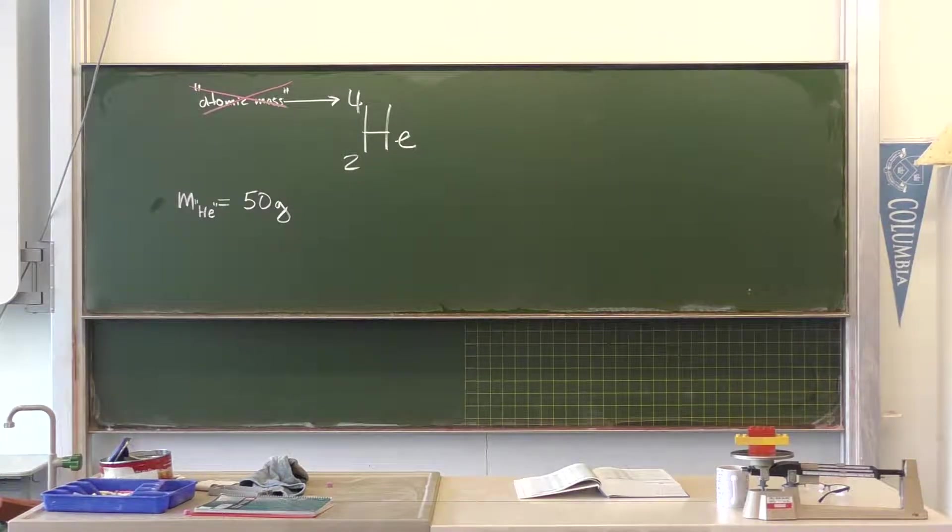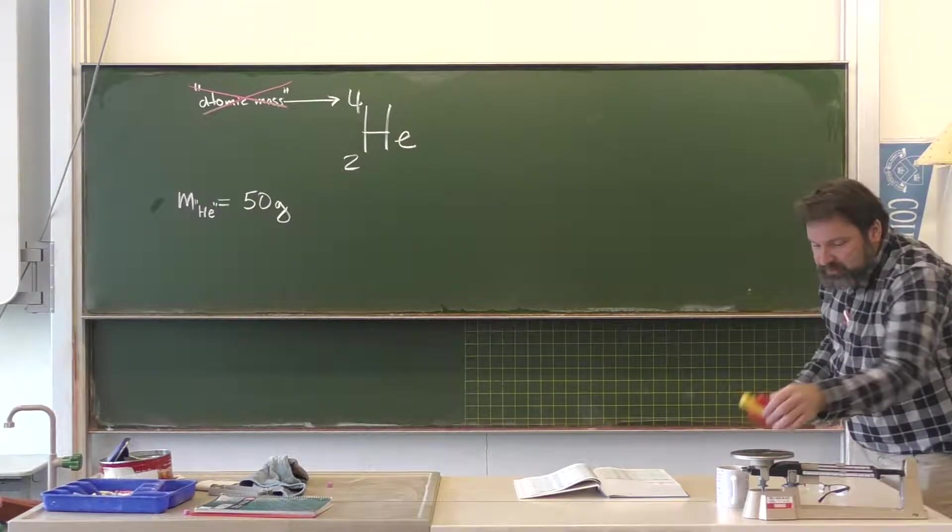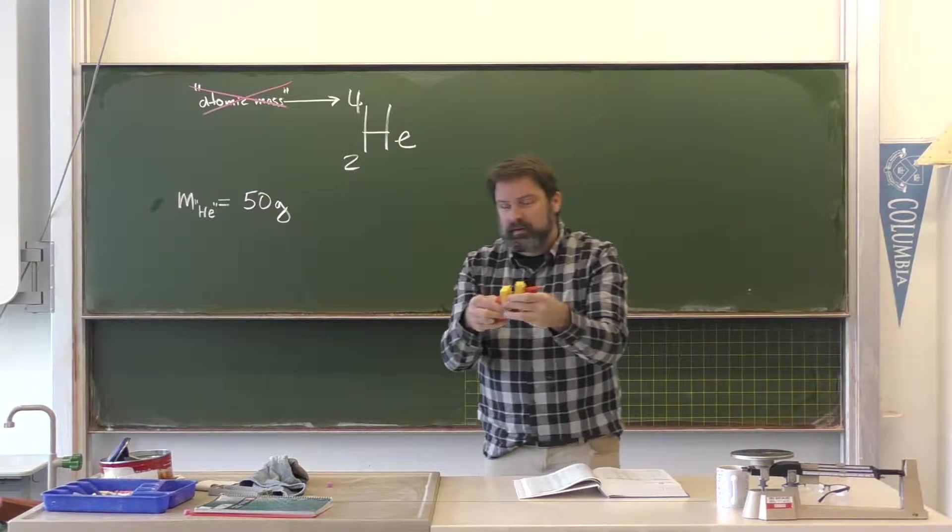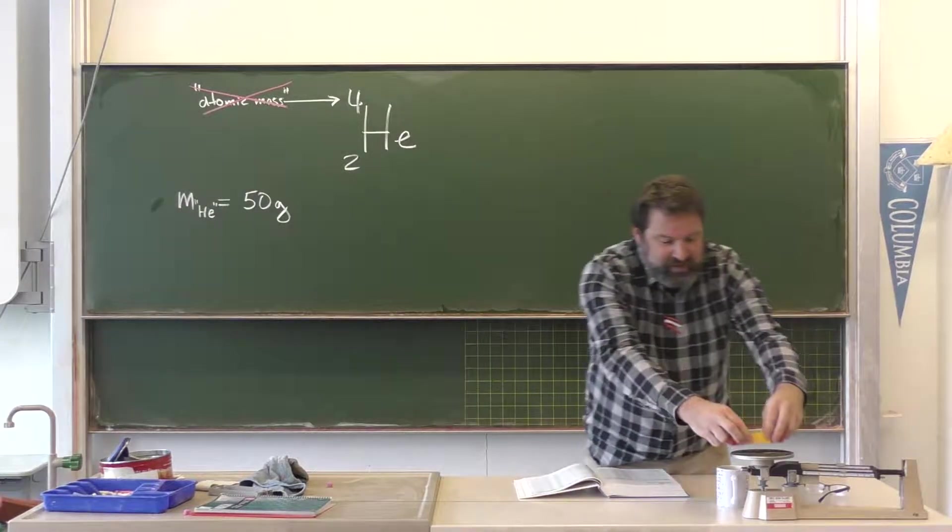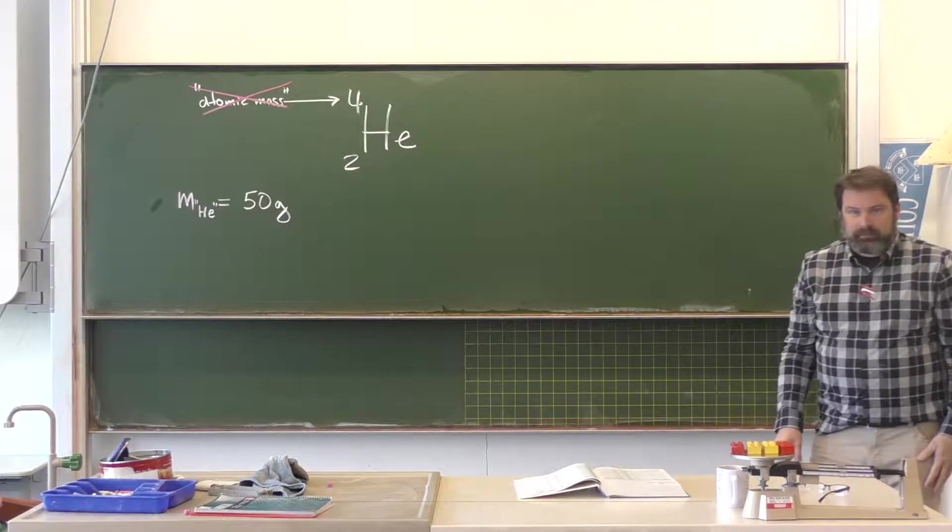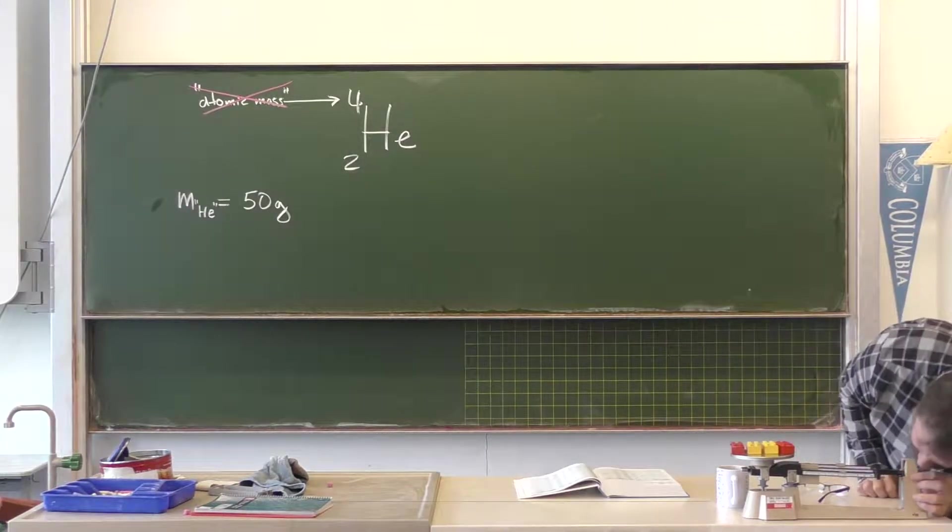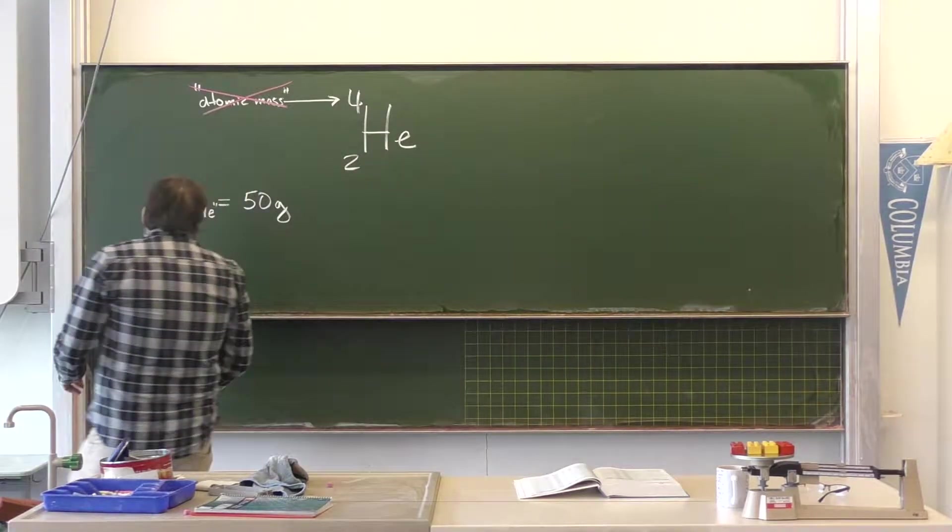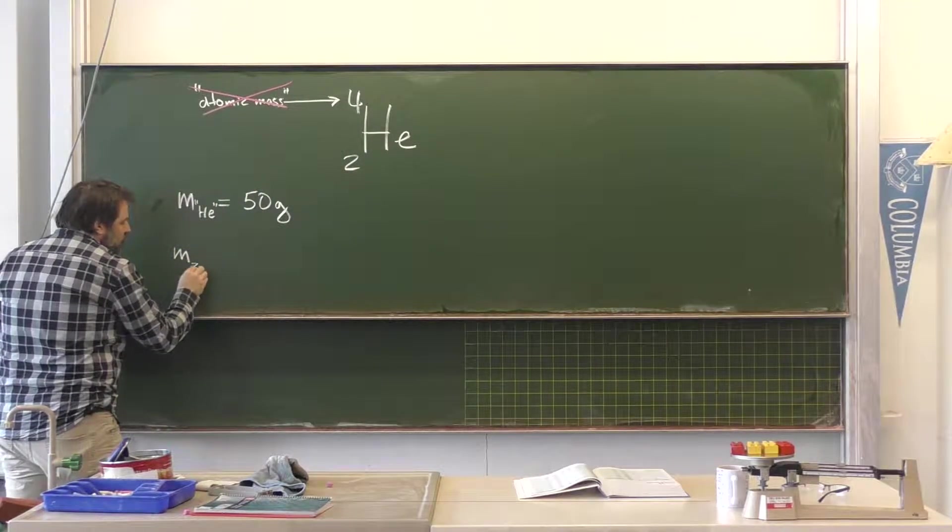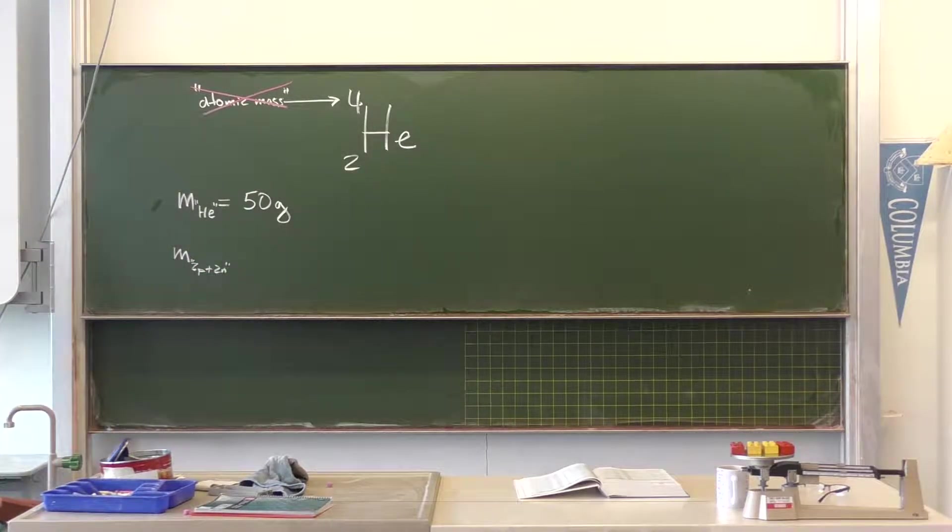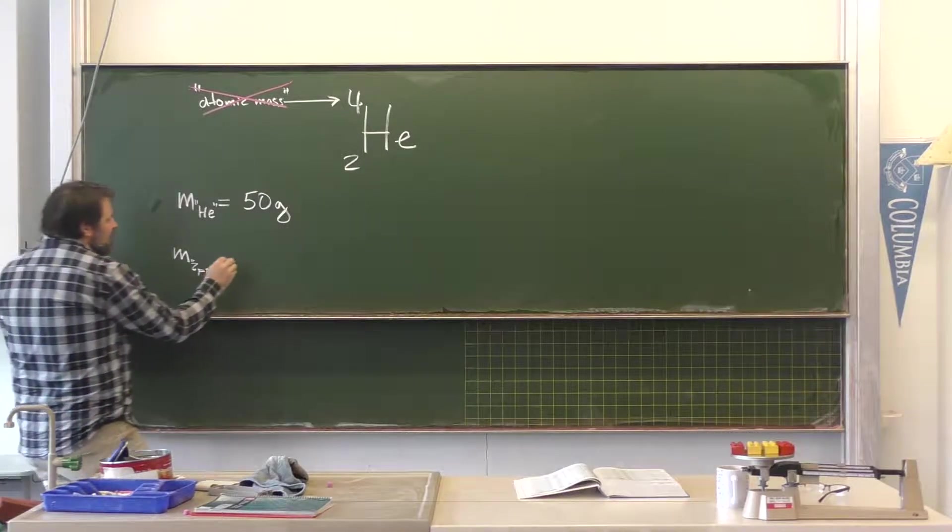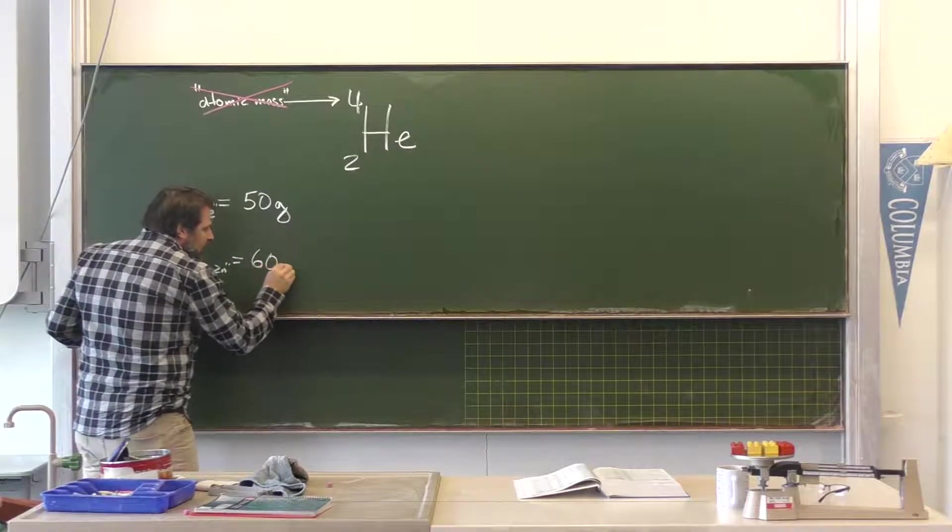Now I'm going to repeat the measurement. You guys ready? Now what I'm going to do is I'm going to take the helium apart into four parts. Like this. And I'm going to re-measure the mass like that. And I'm going to look on here. And I'm going to find that the mass of the two protons and the two neutrons together. Again, of course, this is not actually protons, not actually neutrons. That that mass is 60 grams.